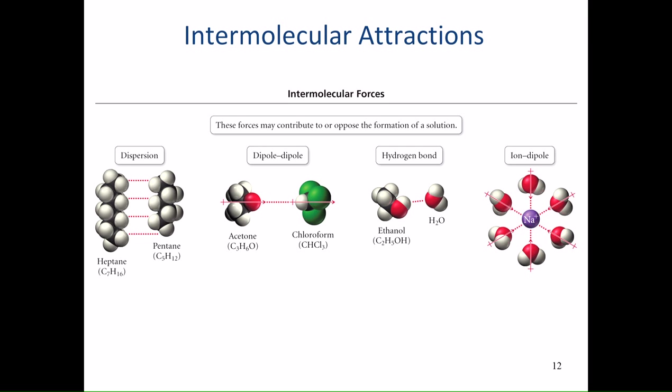To understand these interactions, we need to review intermolecular forces from Chem 1A. Looking at heptane and pentane, all we see are carbon-hydrogen bonds. With those C-H bonds, we basically have only dispersion forces — London dispersion forces — as the type of intermolecular force, and those are very weak.